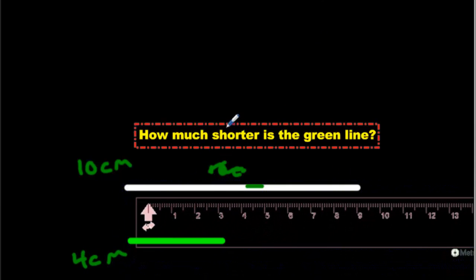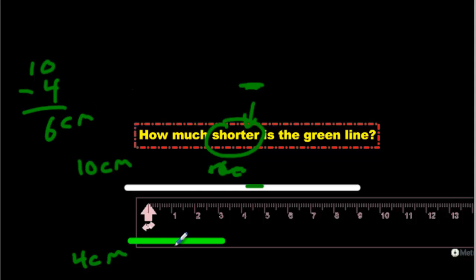And then the question asks us, how much shorter is it? Look at that word. It's another ER word. It means takeaway. So you're still going to go 10, take away 4. And you get the same answer. It's 6 centimeters. So we say the green line is 6 centimeters shorter than the white line.